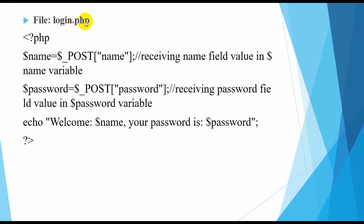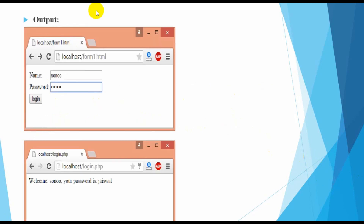Now in login.php, we have two values displayed using echo: 'Welcome $name, your password is $password.' The output will show whatever the user enters — their name and password — on the login page.